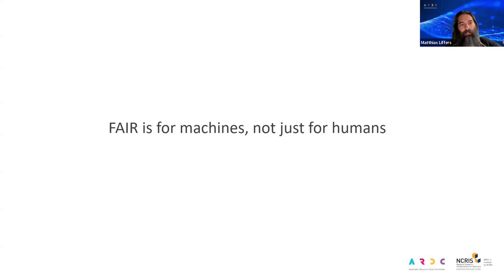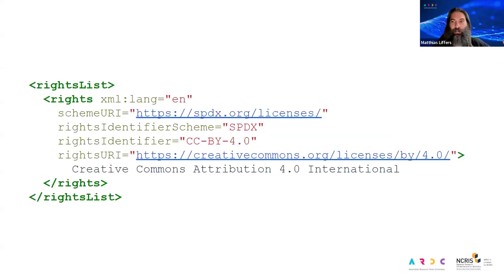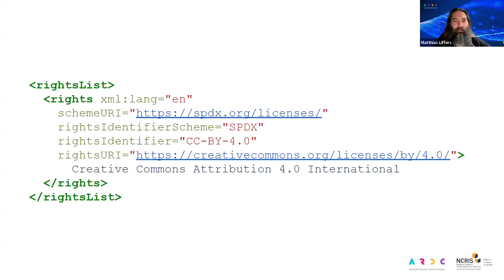One particularly tricky thing to impart to machines is a very human — legal — side of things. What rights are asserted by a data custodian, and what rights do those data custodians assign to data users? In the Datasite metadata schema, the rights property can be used by data custodians in repositories to make assertions about rights in a human-readable and machine-readable way. For example, this metadata snippet asserts that a particular object is available for reuse under the terms of the Creative Commons Attribution license.